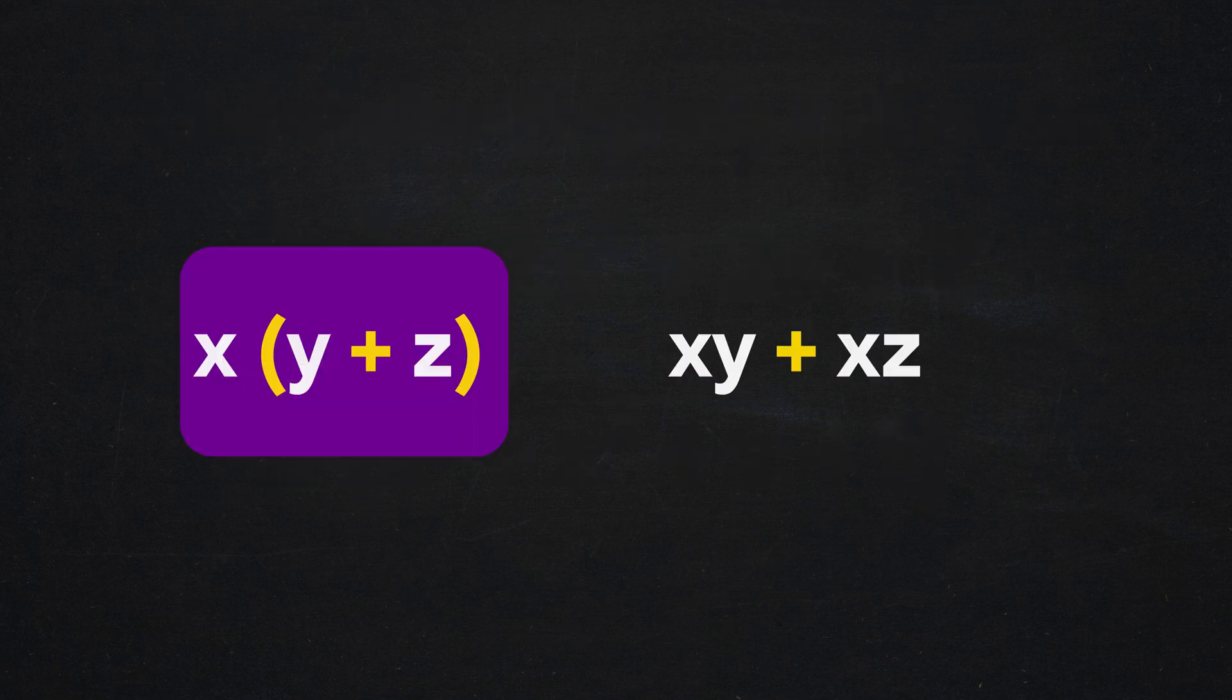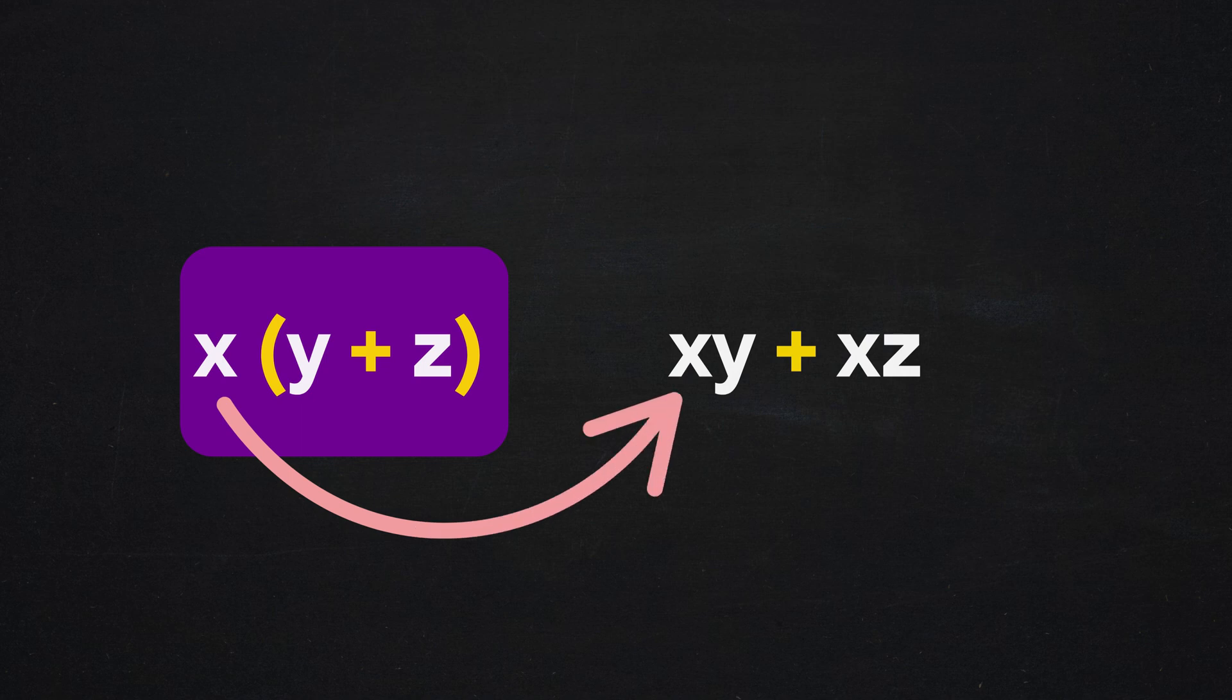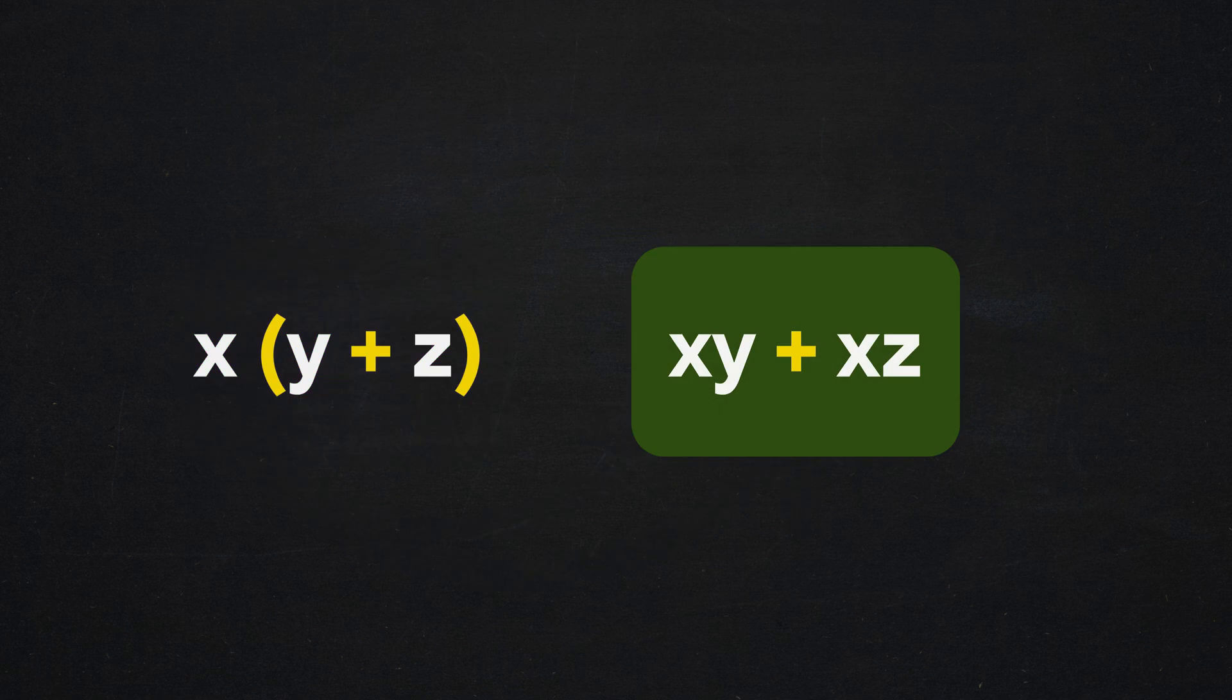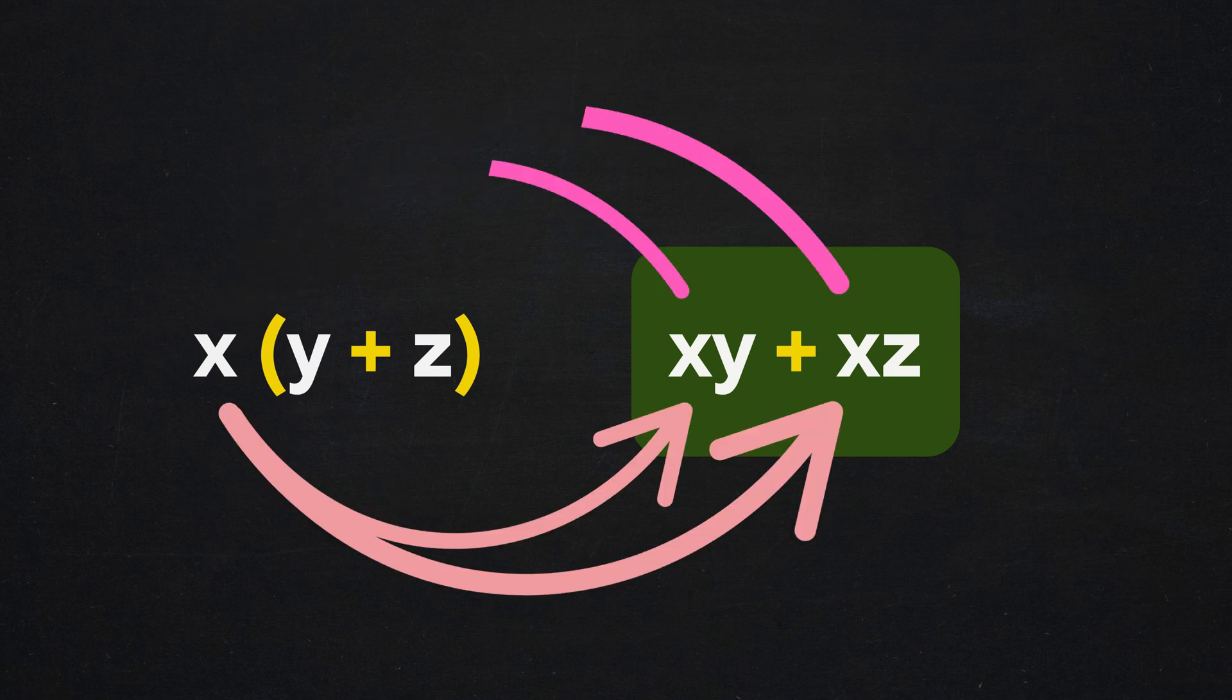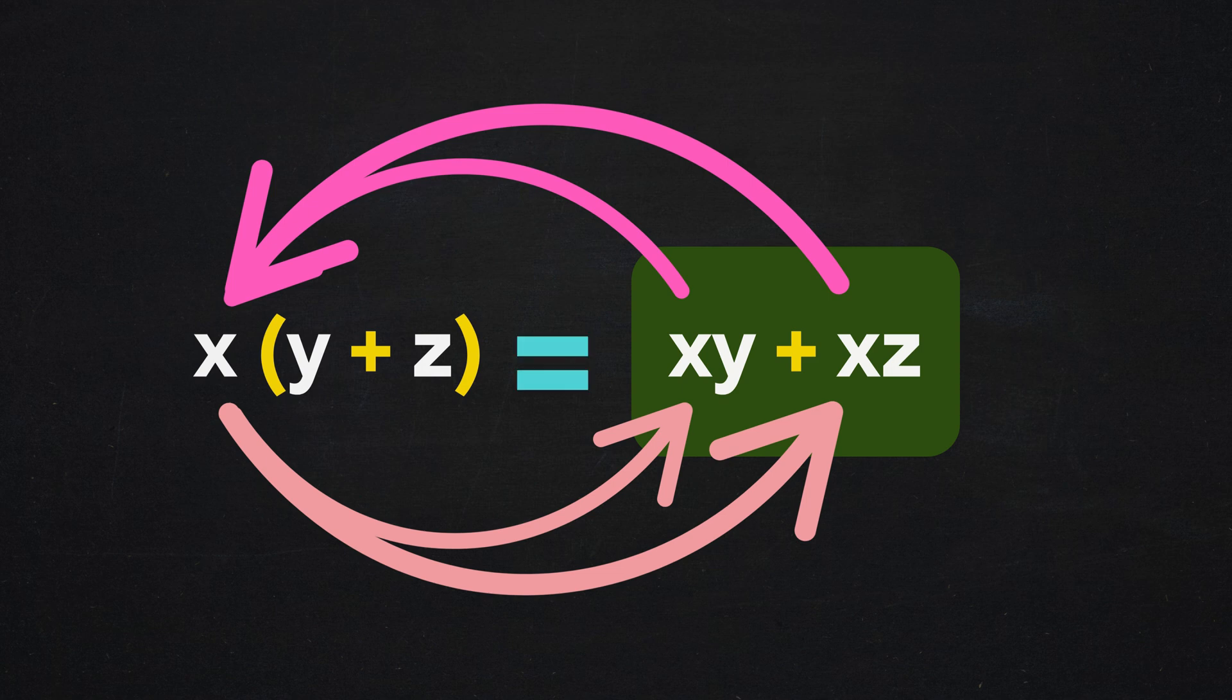So if we got x times the group y plus z, you can distribute a copy of the factor x to each member of the group. But if you're given the expression xy plus xz, you can apply the distributive property in reverse and factor out the x so that it is multiplied by the whole group at once. Distributing and undistributing a factor are just ways of going back and forth between two equivalent forms of an expression with no change in the value of the expression.